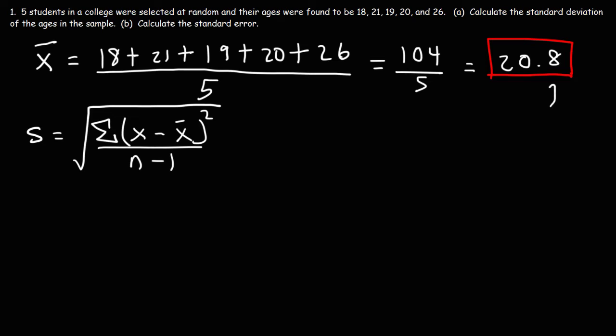So we already have the mean. x represents each of these individual values. This is going to take the whole page. So the first x value that we have is 18. We're going to subtract it from x bar, the mean, which is 20.8. And then we're going to take the square of that result.